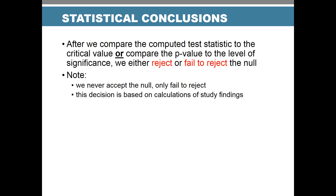After performing either method, we make a conclusion about whether we reject or fail to reject the null hypothesis. Note that we never 'accept' the null hypothesis — it's more correct to say 'fail to reject,' because with a better sample in the future we might reach a different conclusion. Science is only based on the information we have at that time.